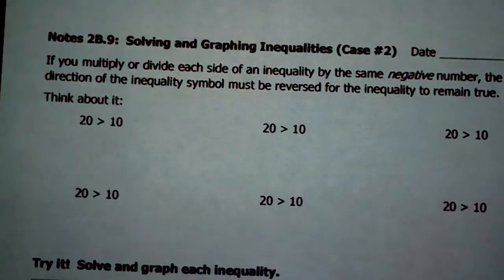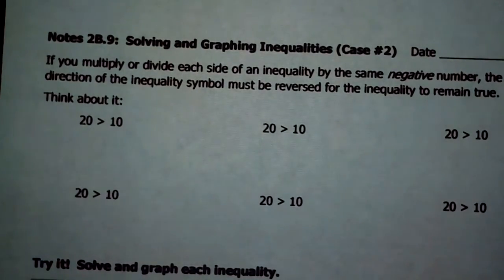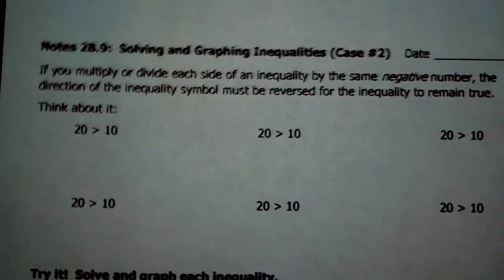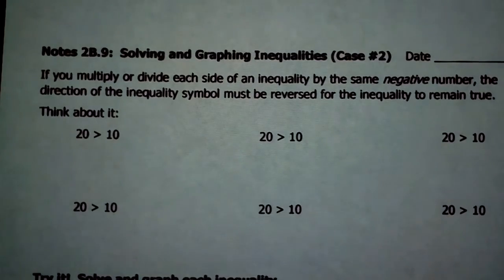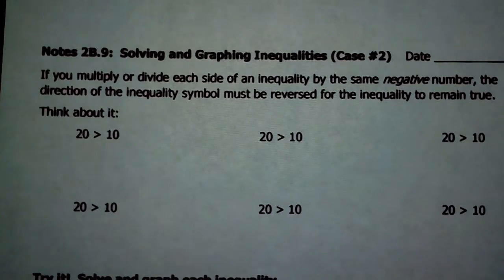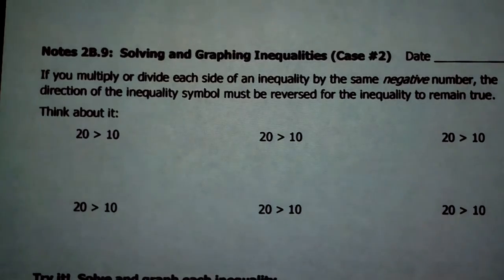So you might be thinking, we just solved and graphed inequalities, and we did a lot — why do we have to do more? Well, because in case number 1 I didn't show you the weird things that can happen in inequalities when negative numbers are involved. We didn't have any examples like the ones we're going to do today, so this is almost like a special case. You'll get very used to special cases next year, especially in Algebra 1.